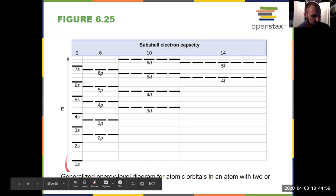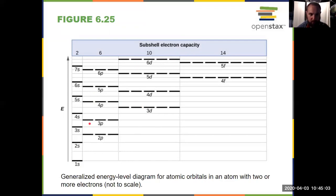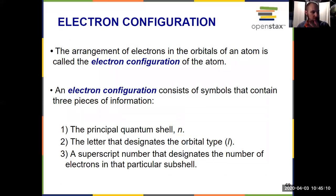So the lowest energy, the 1s, followed by 2s, 2p, 3s, 3p, etc. So we'll pick back up with orbital diagrams in a second.